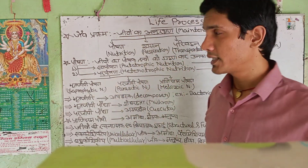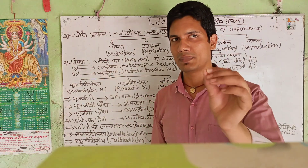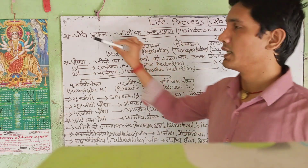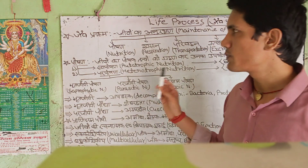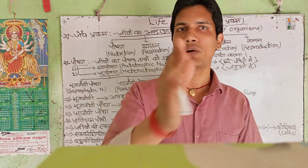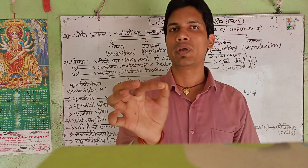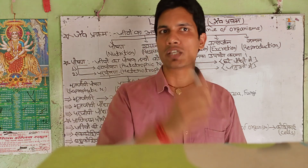We will talk about the first topic of our biology chapter: Life Process. What is life process? Life process is the process by which a living organism is maintained. The processes that maintain living organisms are called life processes.